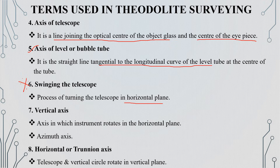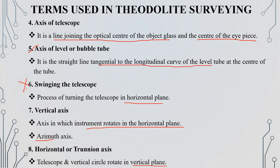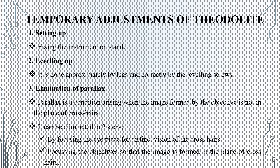The next term is vertical axis, which is the axis about which the instrument rotates in the horizontal plane, also called the azimuth axis. The next is the horizontal or trunnion axis. The horizontal axis is the axis about which the telescope rotates, causing the vertical plane to rotate.